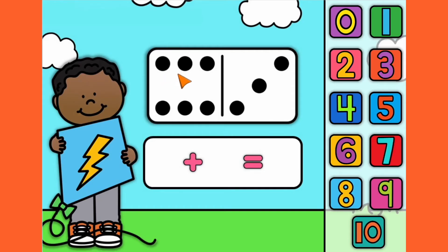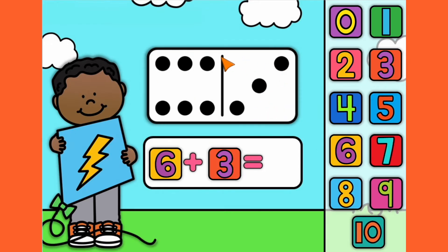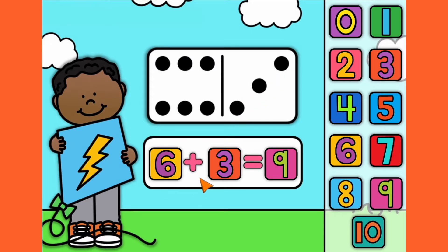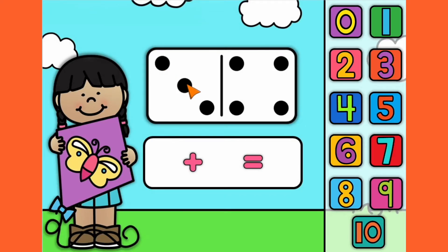1, 2, 3, 4, 5, 6, 7, 8, 9. 1, 2, 3, 4, 5, 6, 7, 8, 9. 6 plus 3 equals 9.